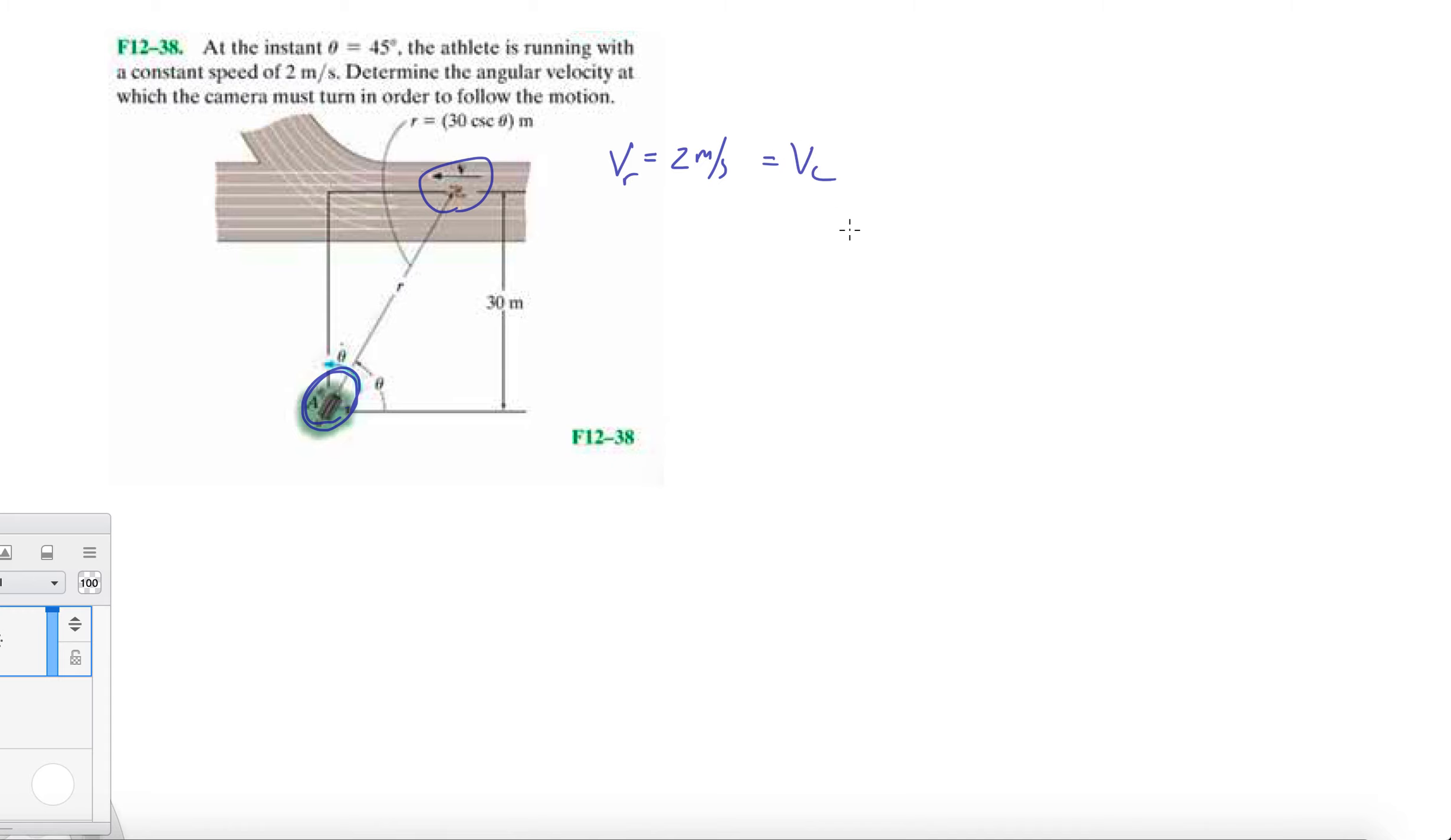The speed of the camera has to equal the speed of the runner. We know the components of the camera velocity. If we write it as a vector, it has two components: VR in the R direction using the book's notation for unit vectors, and V_theta in the theta direction. The magnitude of those has to equal two meters per second.